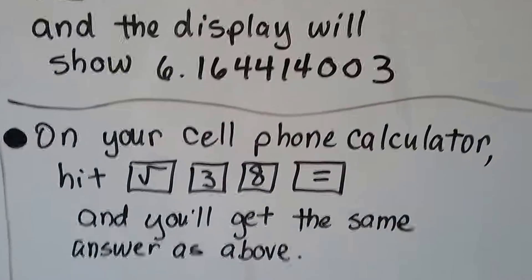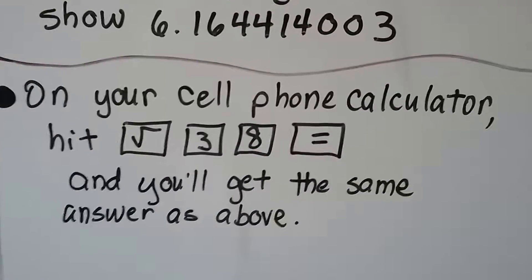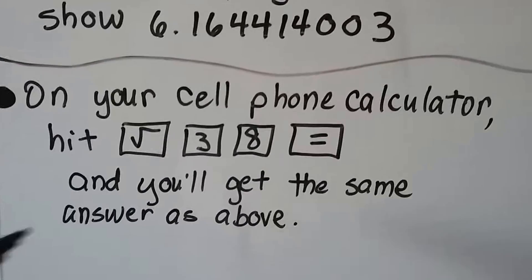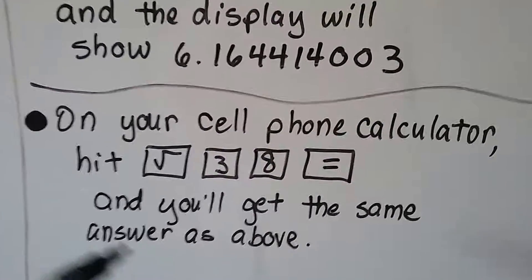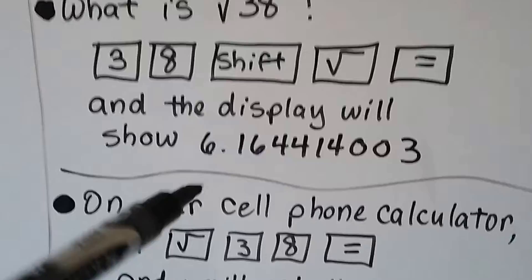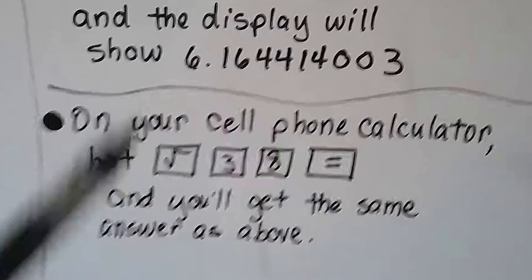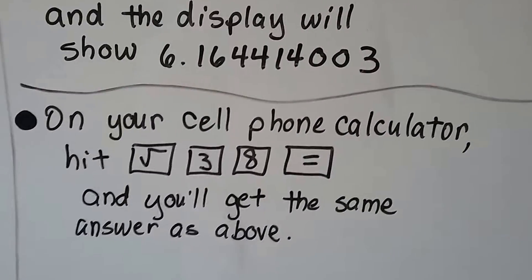Now, on your cell phone calculator, you know, when you turn your cell phone sideways, it makes a scientific calculator. You can actually hit the square root key, and then the 3 and the 8 equals, and that will give you the square root of 38, and it'll give you the same answer as this. Now, if you have to watch the video again a second time, that's no big deal.